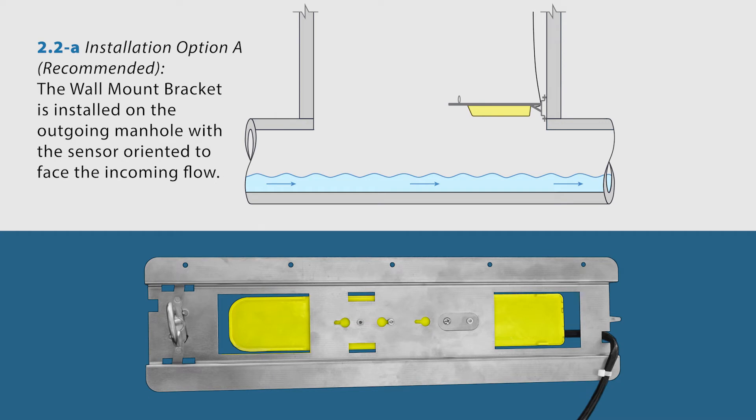orient the sensor to face the oncoming flow and thread the sensor cable through the notch on the non-loop side of the sensor bracket. Thread a cable tie through the hole below the notch and secure the cable.